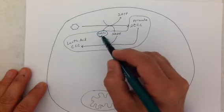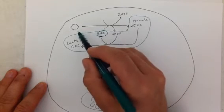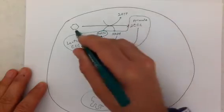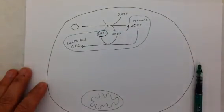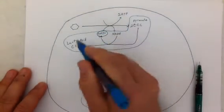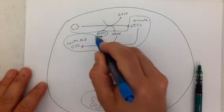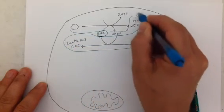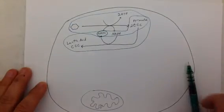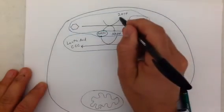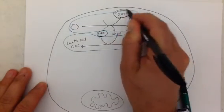In other words, the production of NAD+, allows for the glycolysis process to proceed. And the reason that we want glycolysis to proceed is because it produces a little bit of ATP, right there.